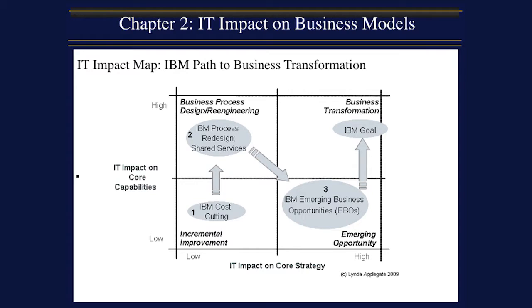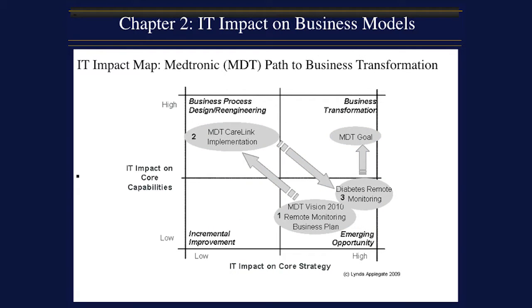The IT Impact Map can be used to analyze the impact of a single project, or it can be used to analyze a series of projects through which a company evolves its strategy over time. This diagram shows how IBM has used IT to transform its business model over time, illustrating the path of using IT to transform its business model and achieve its goals.